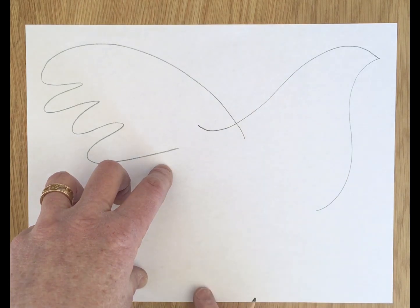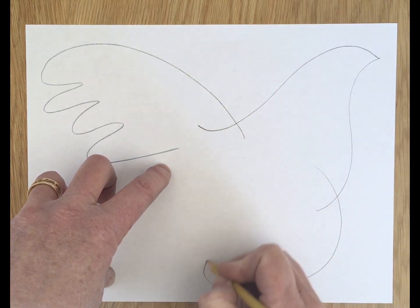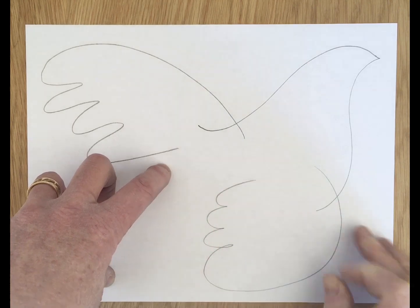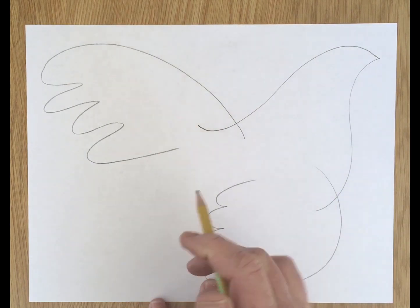And the right wing here at the bottom turns around and again add a few feathers as wavy lines.